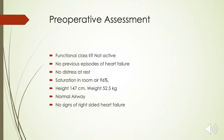He is left with moderate to severe tricuspid valve regurgitation. He has normal neurodevelopment and no other comorbidities. When we saw him for pre-operative assessment he was functional class 2 — not very active but denied any cardiorespiratory symptoms. He did not have any history of previous episodes of heart failure or hospitalization. He was at no distress at rest, and his oxygen saturation was 96%. He was a smaller person with a height of 147 cm and weight of 52.5 kg, with a normal airway and no signs of right-sided heart failure.